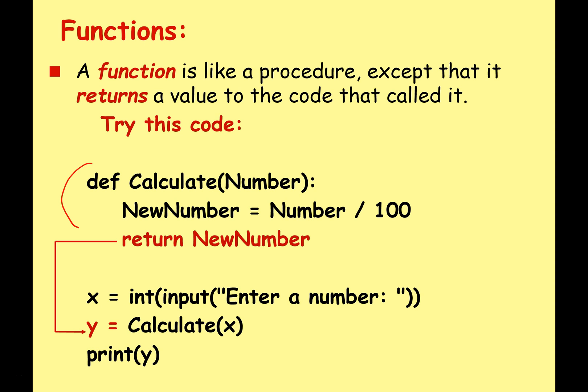Let's have a look at this code here. It looks very similar to a procedure. We're starting with def, we give it a name, we list any parameters that we want to send into this subroutine, we do a little bit of calculating, and then we've got the new line at the bottom: return NewNumber. So it takes whatever the value is and sends it back to the calling code.